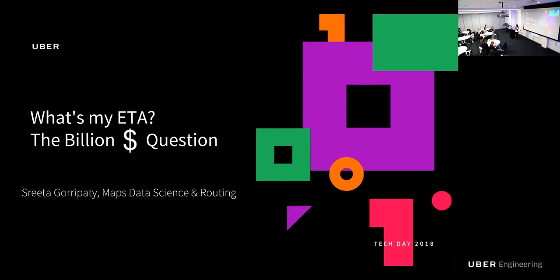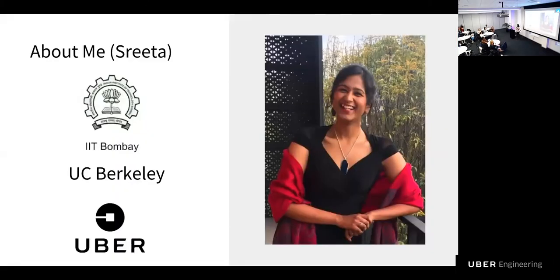I'm Sreeta Ghoripati. I'm a data scientist in the MAPS team. I focus on routing and ETAs, and my team thinks that I'm the ideal person to work for this because my name ends with an ETA. So I guess I'm the authority for this. I did my undergrad in IIT Bombay in India, and I did my MS and PhD at UC Berkeley. I was focusing on transportation engineering, and I've spent the past nine months at Uber focusing on routing and ETAs and trying to answer this question, how can we improve ETAs and user experience?